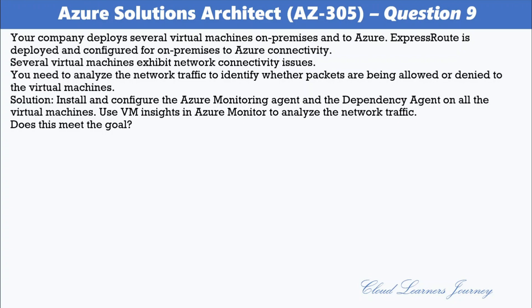Question number nine: Your company deploys several virtual machines on-premises and to Azure. ExpressRoute is deployed and configured for on-premises to Azure connectivity. Several virtual machines exhibit network connectivity issues. You need to analyze the network traffic to identify whether packets are being allowed or denied to the virtual machines. The proposed solution is: install and configure the Azure Monitor agent and the dependency agent on all virtual machines, and use VM Insights in Azure Monitor to analyze the network traffic. Does this meet the goal? The correct answer is B — No. Use Azure Network Watcher IP Flow Verify, which allows you to detect traffic filtering issues at a VM level.